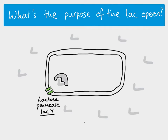Once inside the cell, we need to break the lactose down. Lactose is a disaccharide, so the cell needs an enzyme to hydrolyze the lactose into glucose and galactose — two monosaccharides — and the cell can then use the glucose as its respiratory substrate.